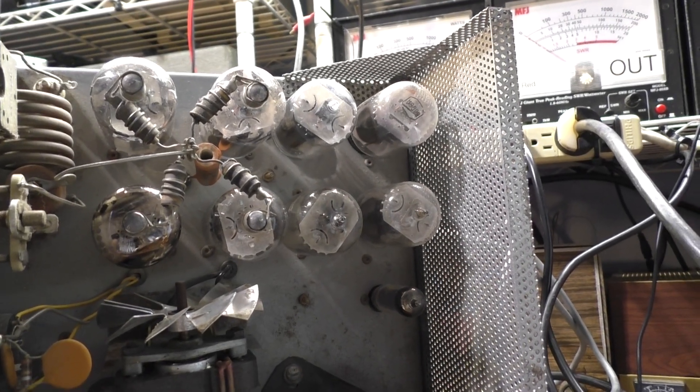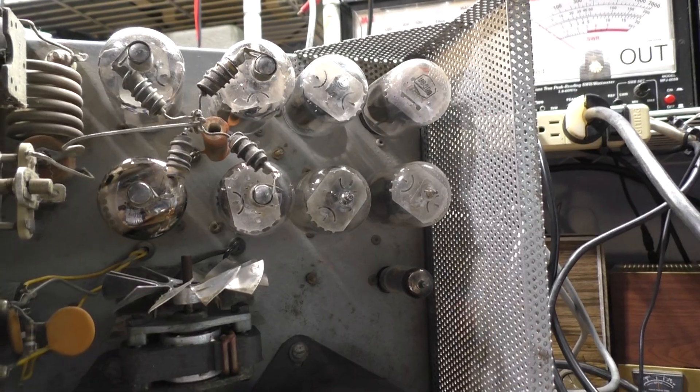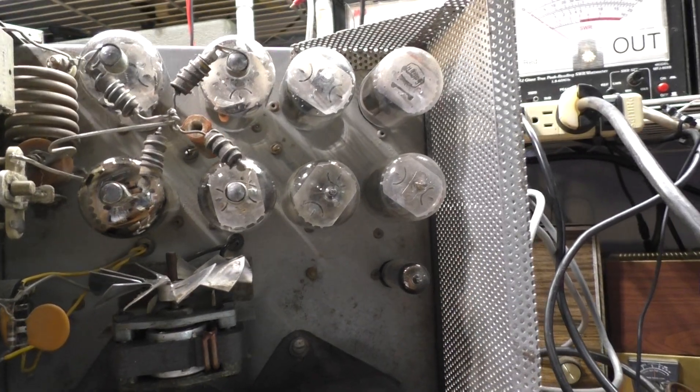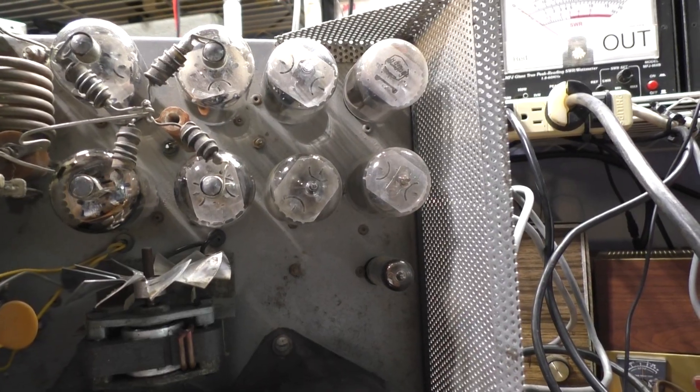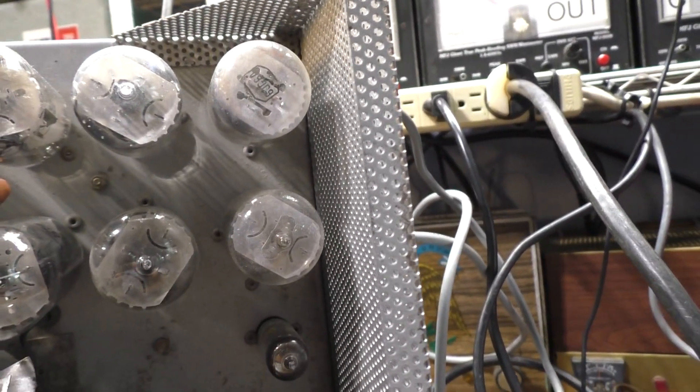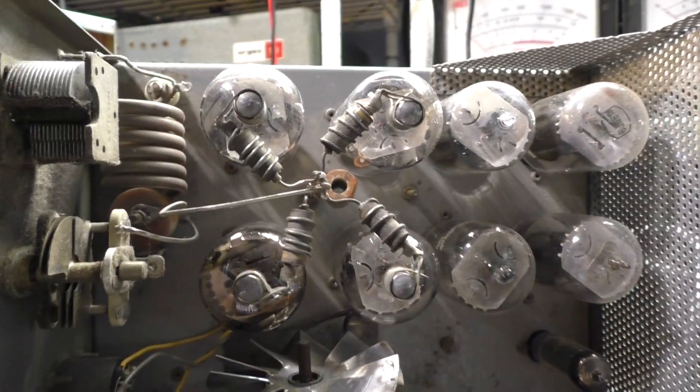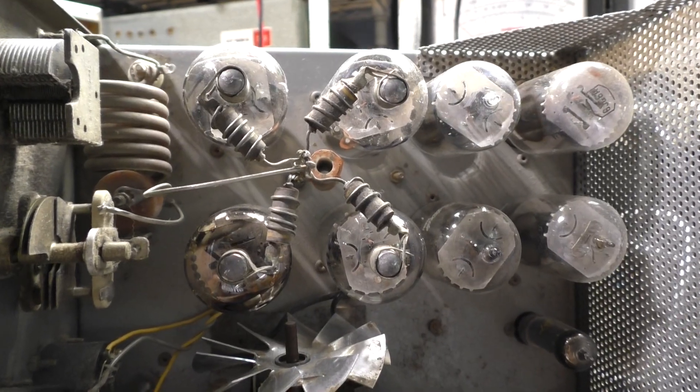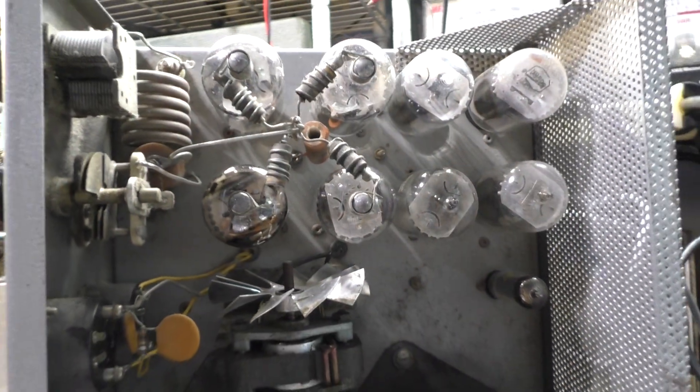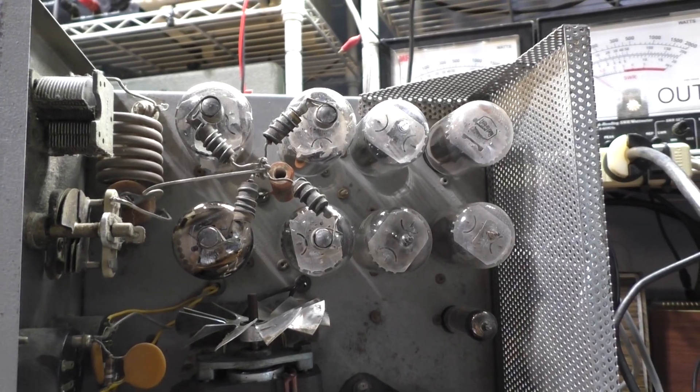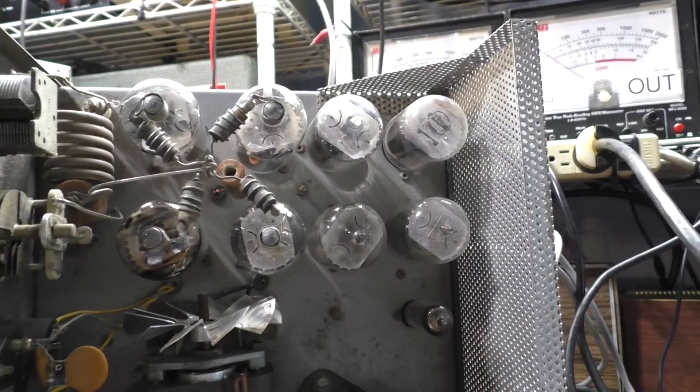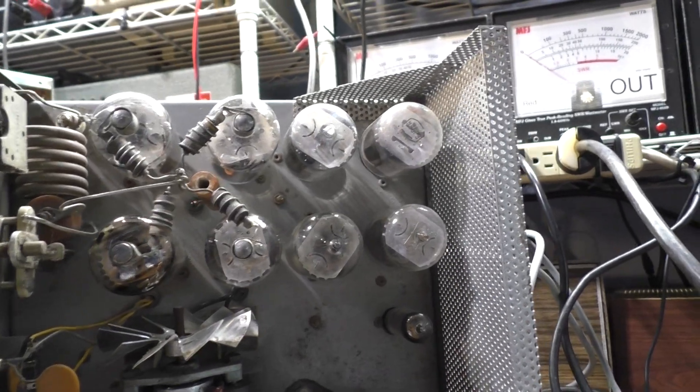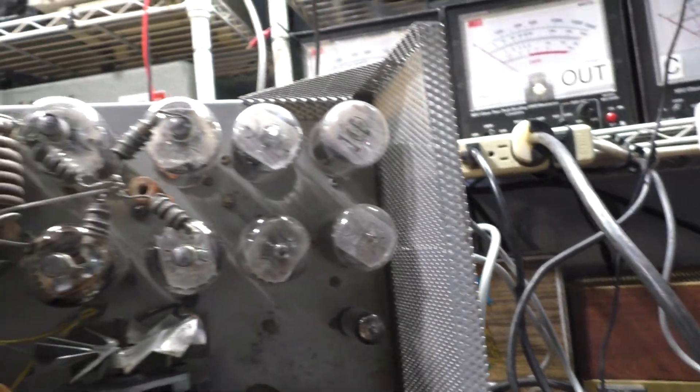On the low side, even though DNA made a few different versions where they didn't always do it that way, on this version on the low side all that's running is the four baldies. It's not activating or using the four larger tubes at all on the low side of this amplifier.